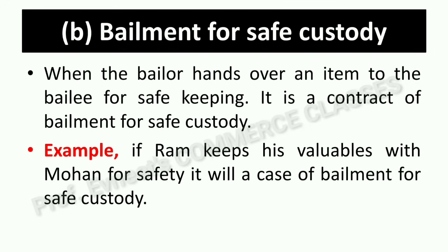Next is bailment for safe custody. When the bailer hands over an item to the bailee for safekeeping, it is a contract of bailment for safe custody. For example, if Ram keeps his valuables with Mohan for safety — suppose Ram is going somewhere and leaves his jewelry with Mohan saying he will collect it when he returns — he is keeping it for safety. This is bailment for safe custody.